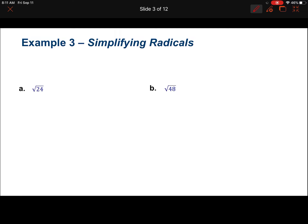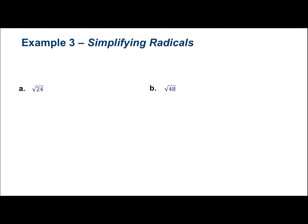Looking at simplifying radicals, notice that on your notes I wrote the cube root of 24, but I've changed it to the square root of 24. We want to find a perfect square that goes into 24 — a number with a perfect square root that divides 24. In this case, 24 is 4 times 6, so we get the square root of 4 times the square root of 6. The square root of 4 is 2, and we can't simplify the square root of 6 anymore, so our final answer is 2 square root of 6.